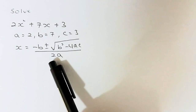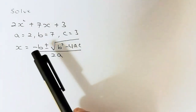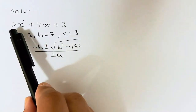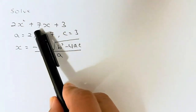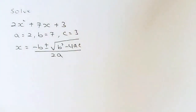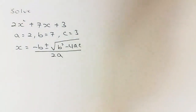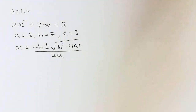So what is a, b and c? a is the coefficient of the x squared term, b is the coefficient of x, and c is the constant. For example, if we have the equation 2x squared plus 7x plus 3, then a is equal to 2, b is equal to 7, and c is equal to 3.